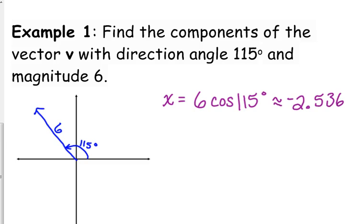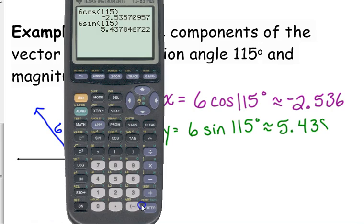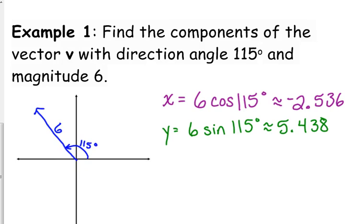That should make sense because we're in the second quadrant — x coordinates are negative there. Our y component would be the magnitude times sine of the angle: 6 times sine of 115, which gives approximately 5.438. That makes sense too — y coordinates are positive in the second quadrant. Also, the y component is greater in magnitude than the x component because 115 degrees is closer to 90 than to 180, so the vector is more vertical than horizontal.